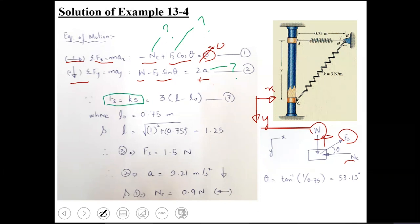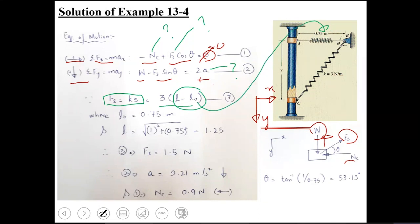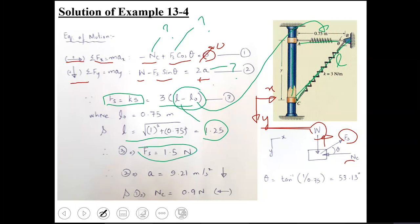The third equation comes from the spring force formula: Fs = k(L − L₀), where k = 3 N/m and L₀ = 0.75 m. The current length L is found using the Pythagorean theorem: L = √(0.75² + 1²) = 1.25 m. Substituting: Fs = 3 × (1.25 − 0.75) = 1.5 N. The system now reduces to two equations with two unknowns.